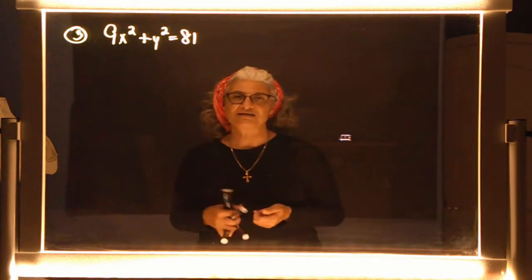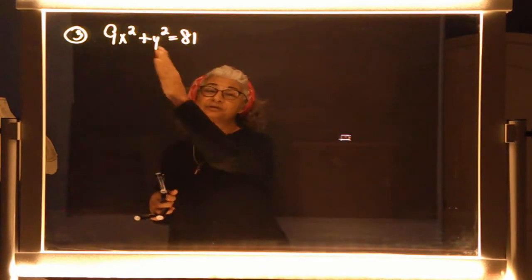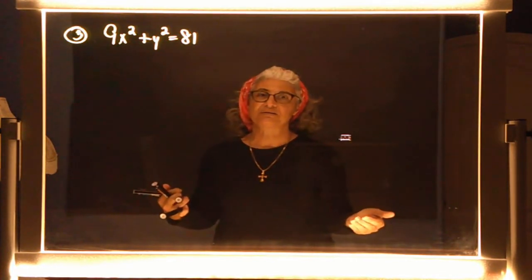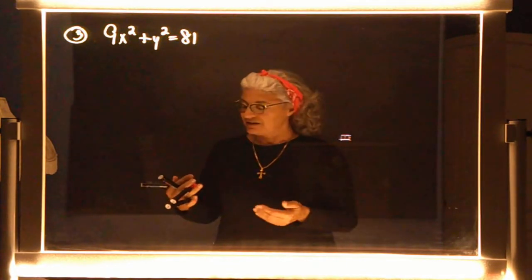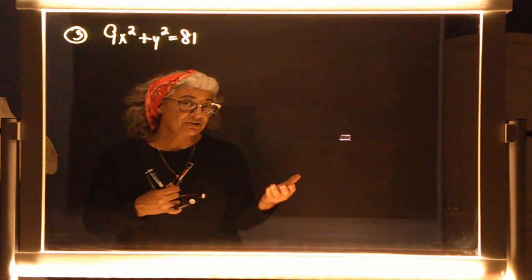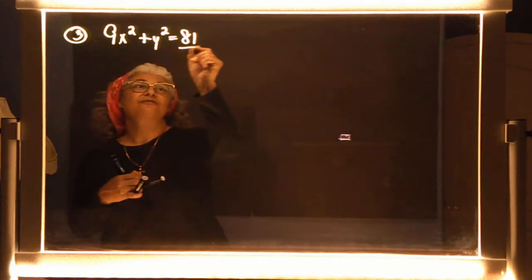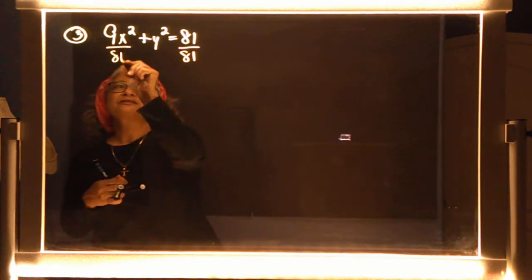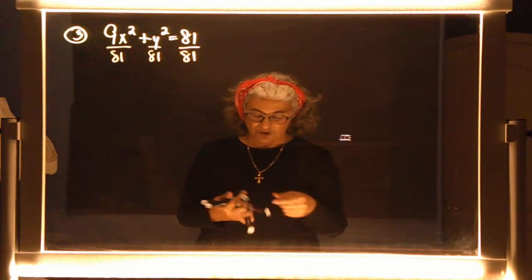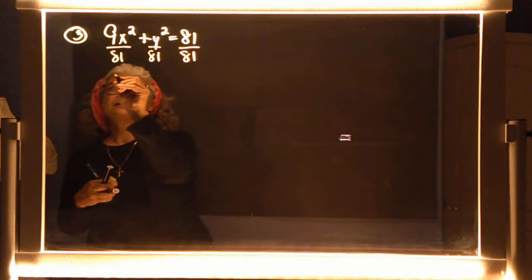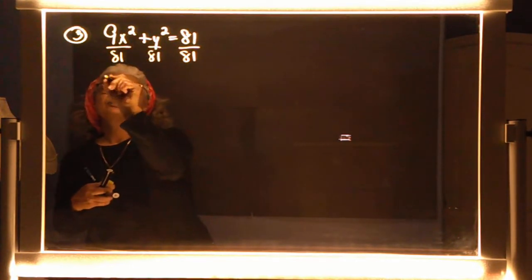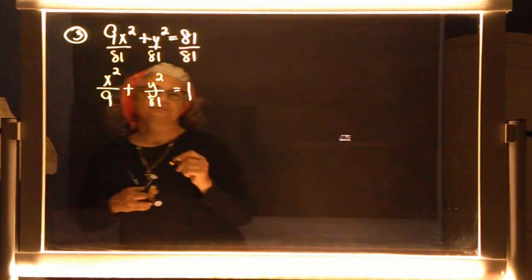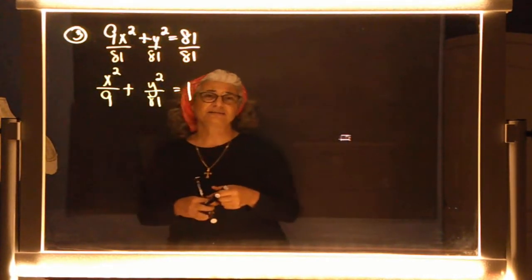This is an ellipse because the coefficients in front of x² and y² are different, but it's not in standard form. To be in standard form, there can't be numbers in front of x² and y², and it must equal 1. It currently has 81 on the right side, so we divide both sides by 81.